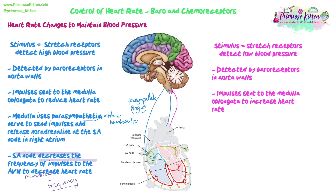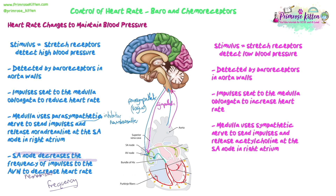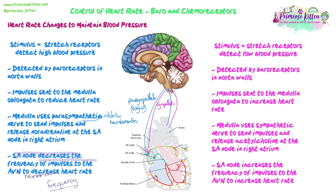If low blood pressure is detected by the receptors, impulses are sent to the medulla to increase heart rate. The medulla uses the sympathetic nerve to send impulses and release acetylcholine — an excitatory neurotransmitter — at the sinoatrial node in the right atrium. This increases the frequency of impulses leaving the sinoatrial node, increases impulses going to the AV node, and therefore increases heart rate. This is important because it prevents things like fainting — if blood pressure drops suddenly, you wouldn't get enough oxygen to your brain, so increasing heart rate helps prevent that from happening.